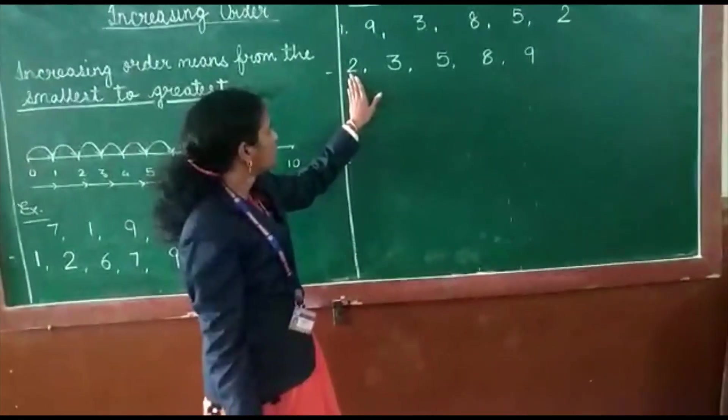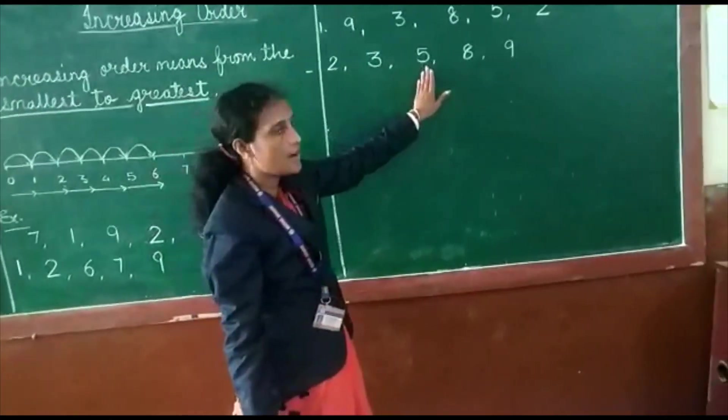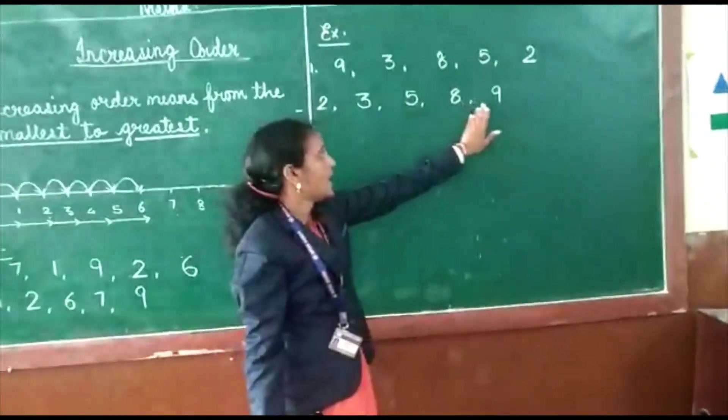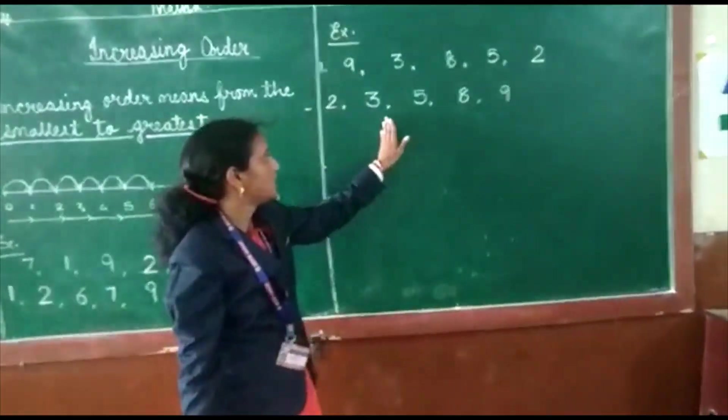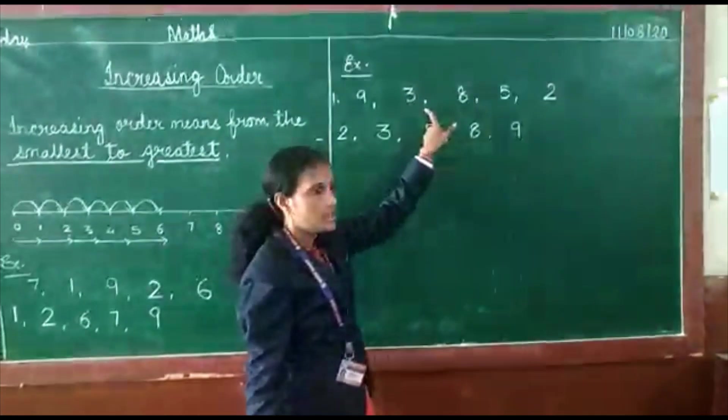Smallest number two, then three, five, eight. And the greatest number is here, nine. This is the increasing order for this exercise.